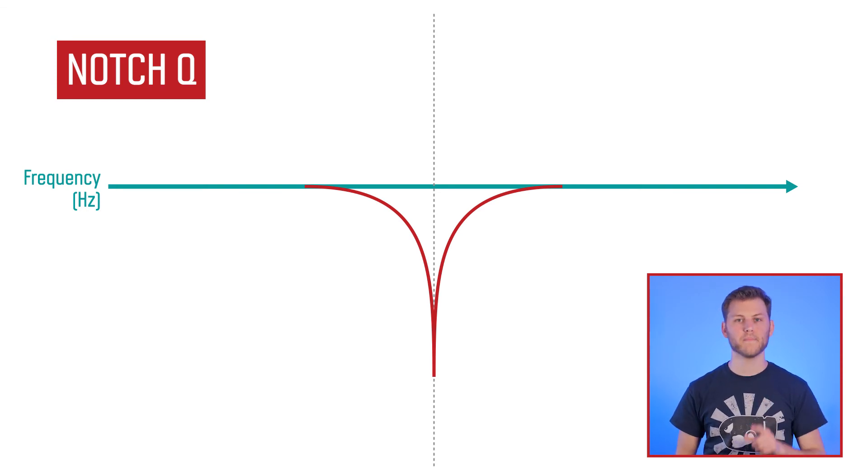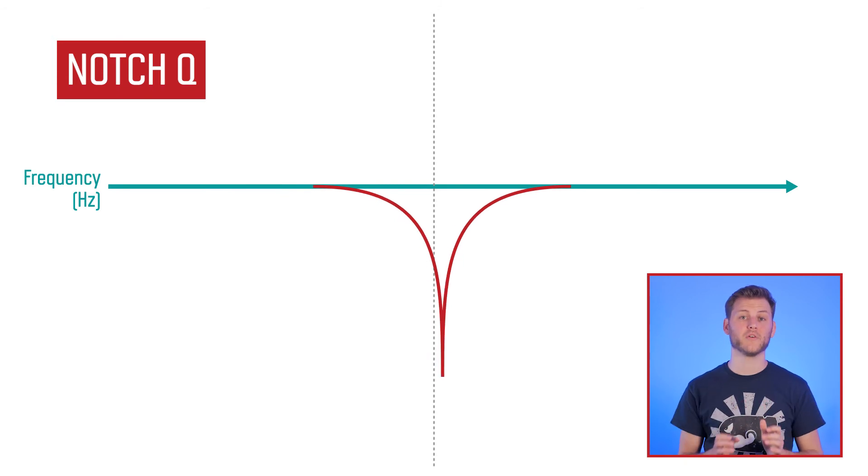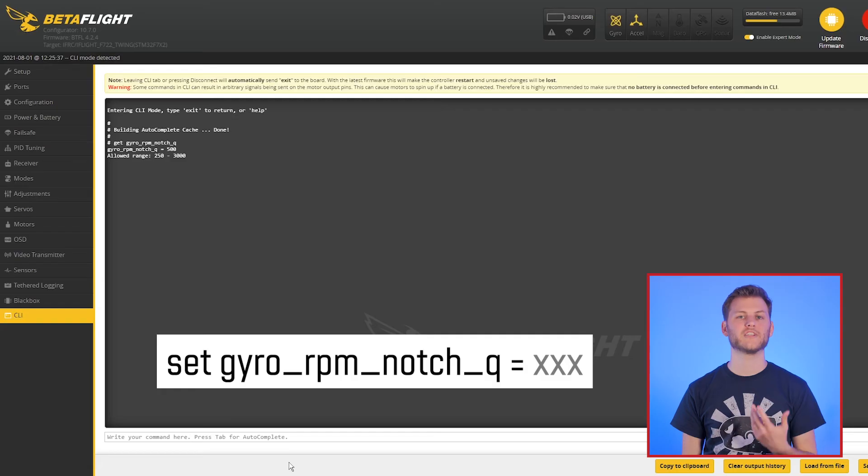In this specific case, be careful though. We are working on a dynamic notch which moves with the target frequency. If we make it too thin, it could actually miss the noise by being slightly offset and it wouldn't work efficiently. So it is not recommended to increase that value. But I can see a case where decreasing the value could be useful. If you still see a lot of motor noise after filtering the signal, a wider notch could be a good solution. You can change it by typing set gyro RPM notch Q and then the value of your choice.